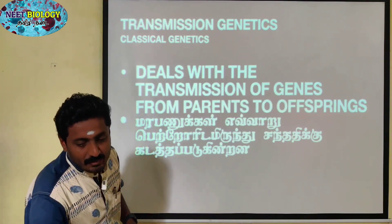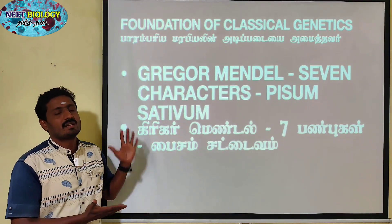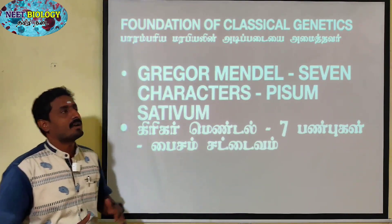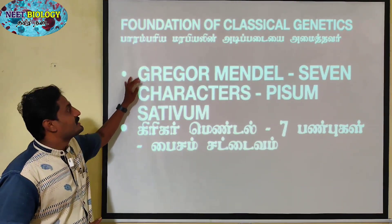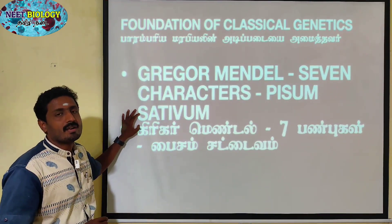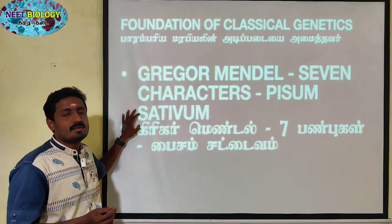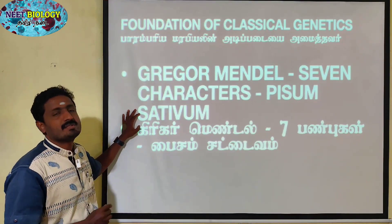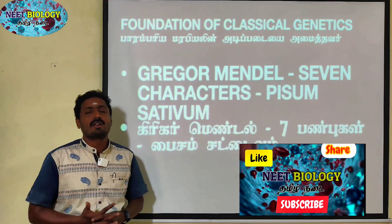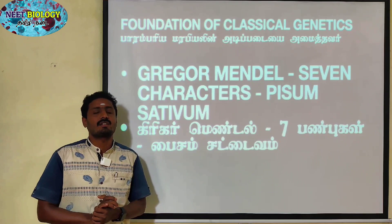Next, the Foundation of Classical Genetics — I have said it is theoretical. Mendel is the founder of classical genetics. Gregor Mendel chose 7 characters. Pisum sativum is the plant he used — the ancient name is Pisum sativum, the garden pea.